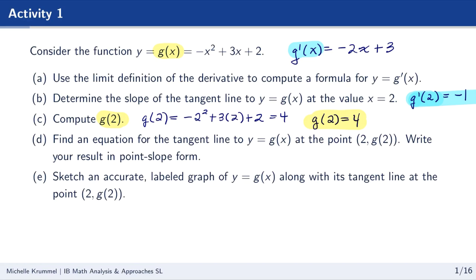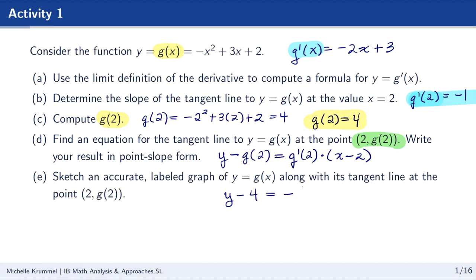Next, find an equation for the tangent line to y equals g of x at the point 2 comma g of 2. We use point-slope form: y minus the y-coordinate of the point of tangency equals the slope times x minus the x-coordinate. Since g of 2 equals 4 and g prime of 2 equals negative 1, we get y minus 4 equals negative 1 times x minus 2. That is the equation of the tangent line at x equals 2.